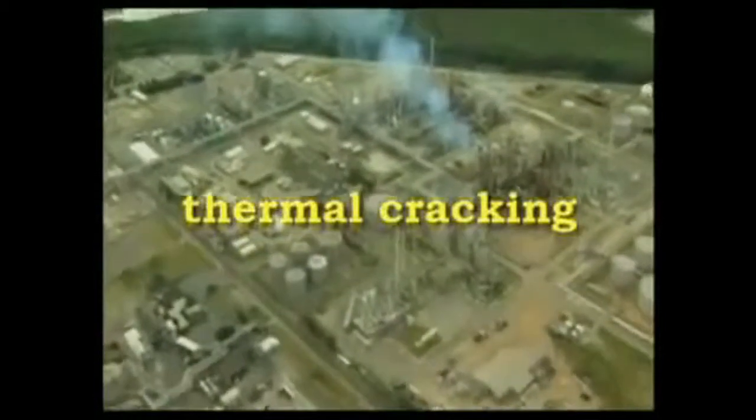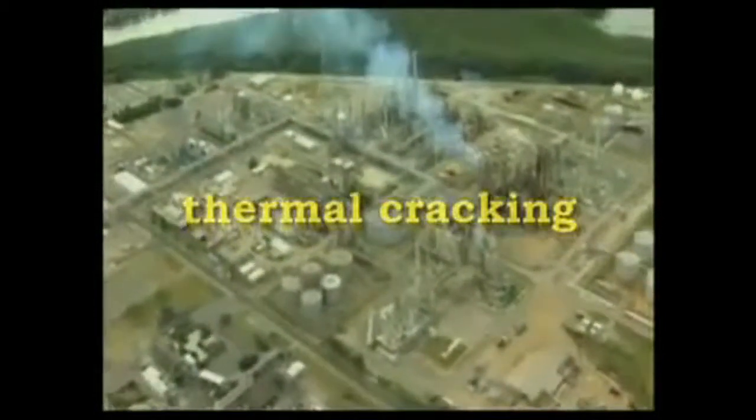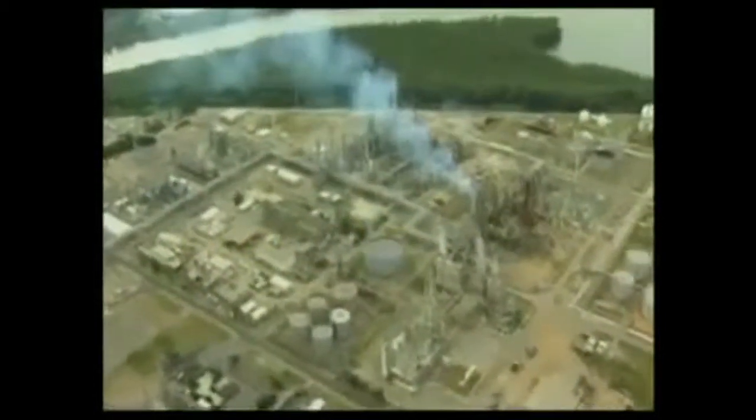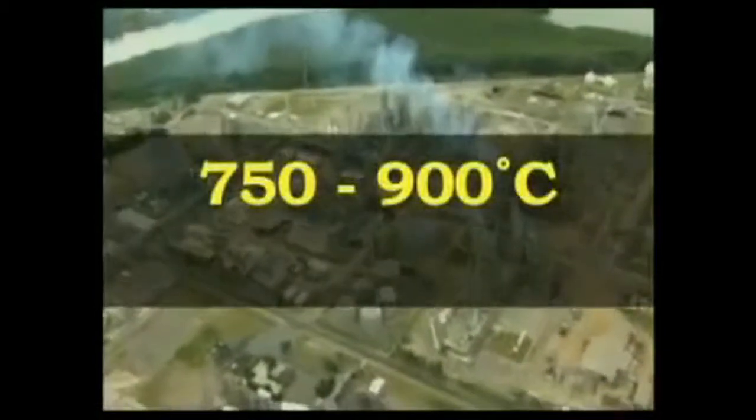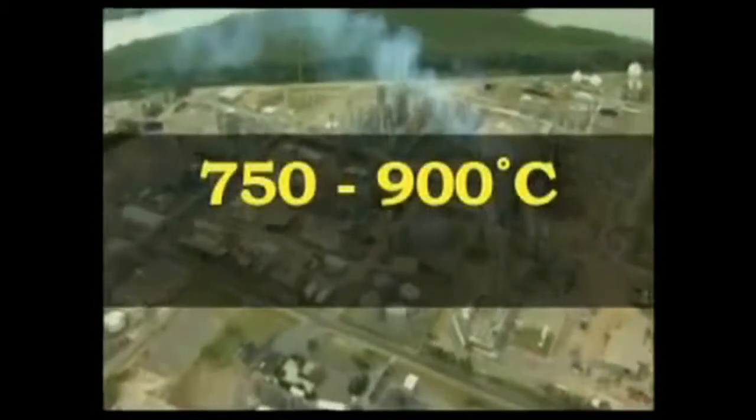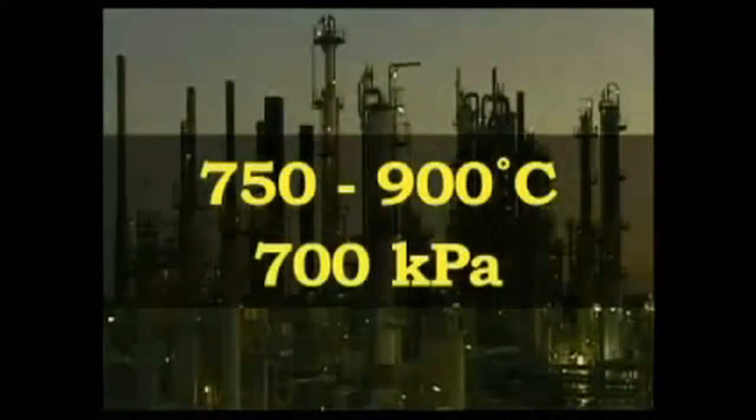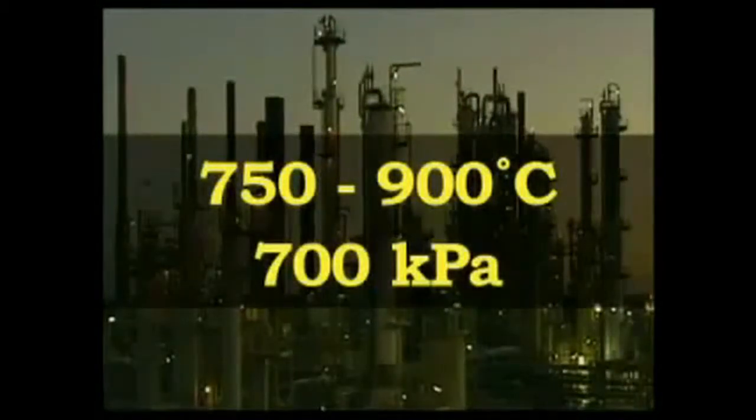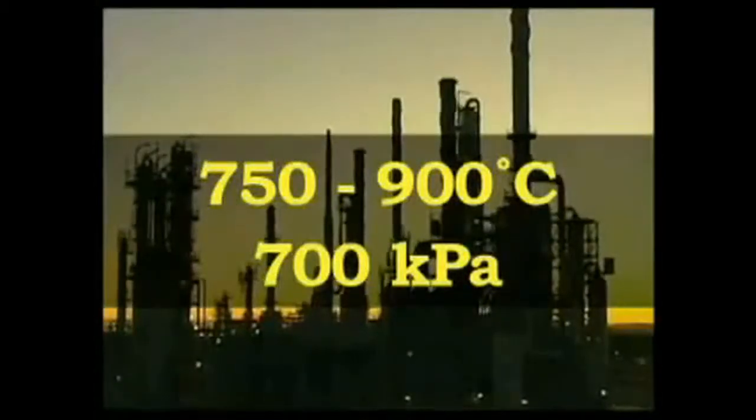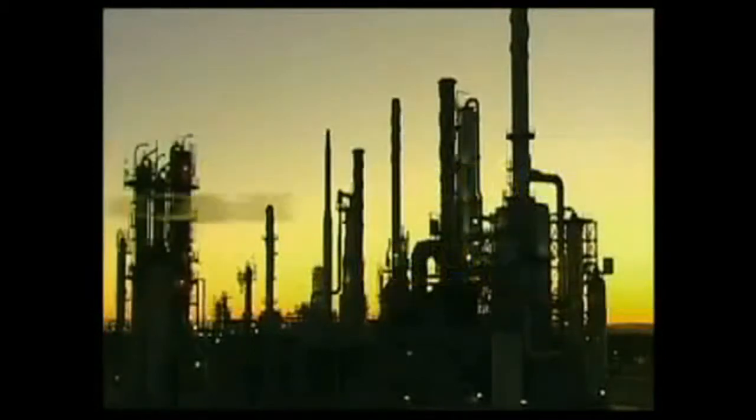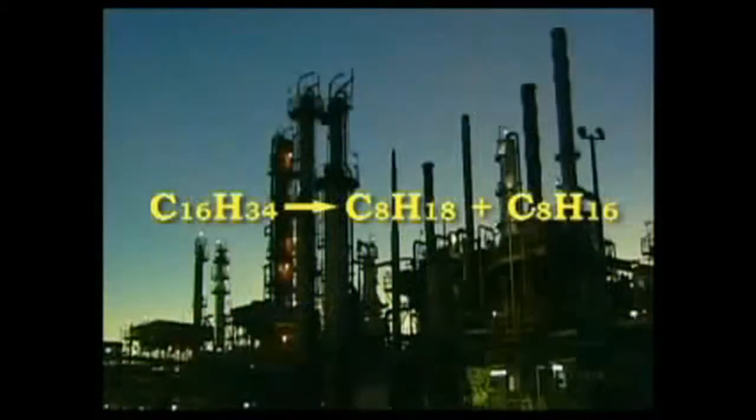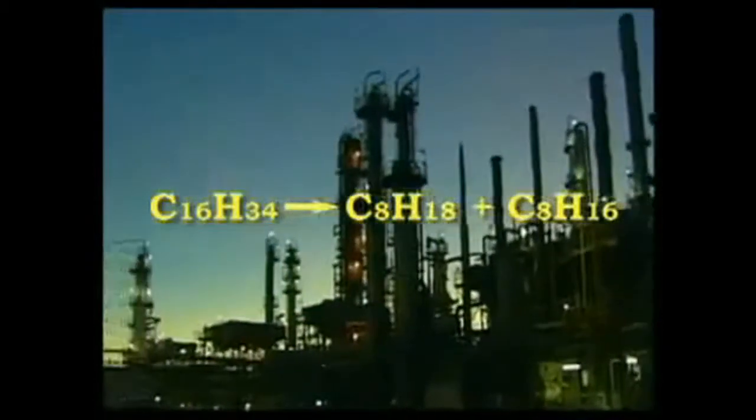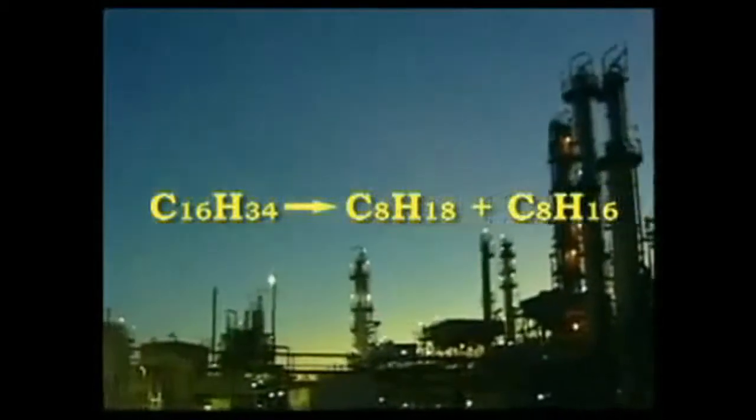Thermal cracking is the simplest and oldest process. The mixture is heated to around 750 to 900 degrees Celsius at a pressure of 700 kilopascals, that is around 7 times atmospheric pressure. This process produces alkenes such as ethene and propene and leaves a heavy residue.